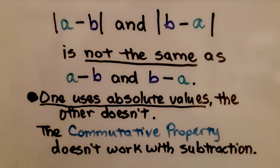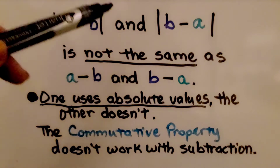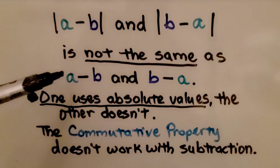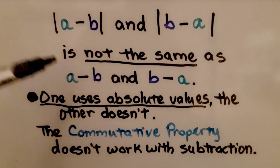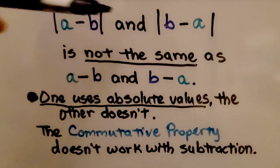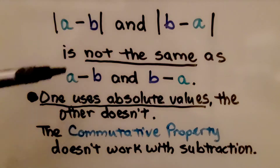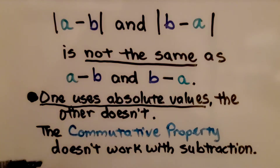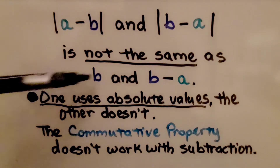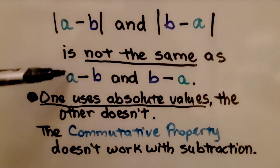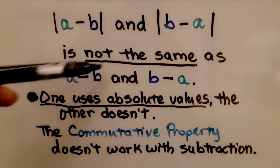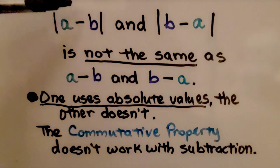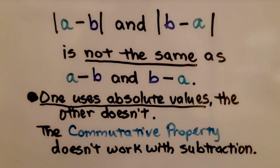Keep in mind, the absolute value of a minus b and the absolute value of b minus a is not the same as a minus b and b minus a — this one uses absolute values, the other one doesn't. The commutative property does not work with subtraction. We can't have seven minus two equal to two minus seven. But if we're doing absolute values, it will work, because absolute values are always positive.